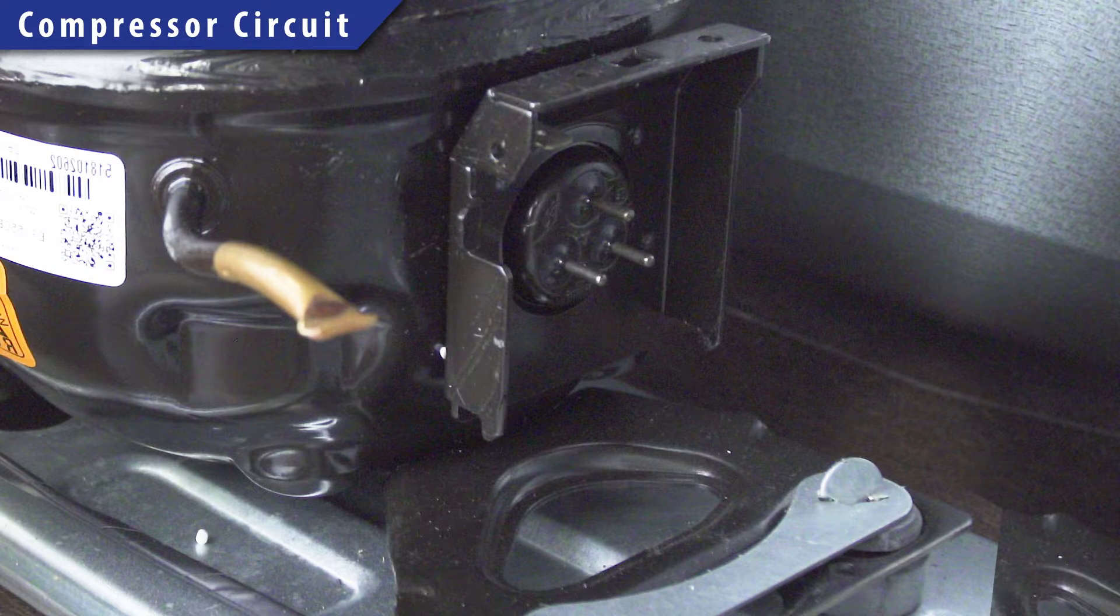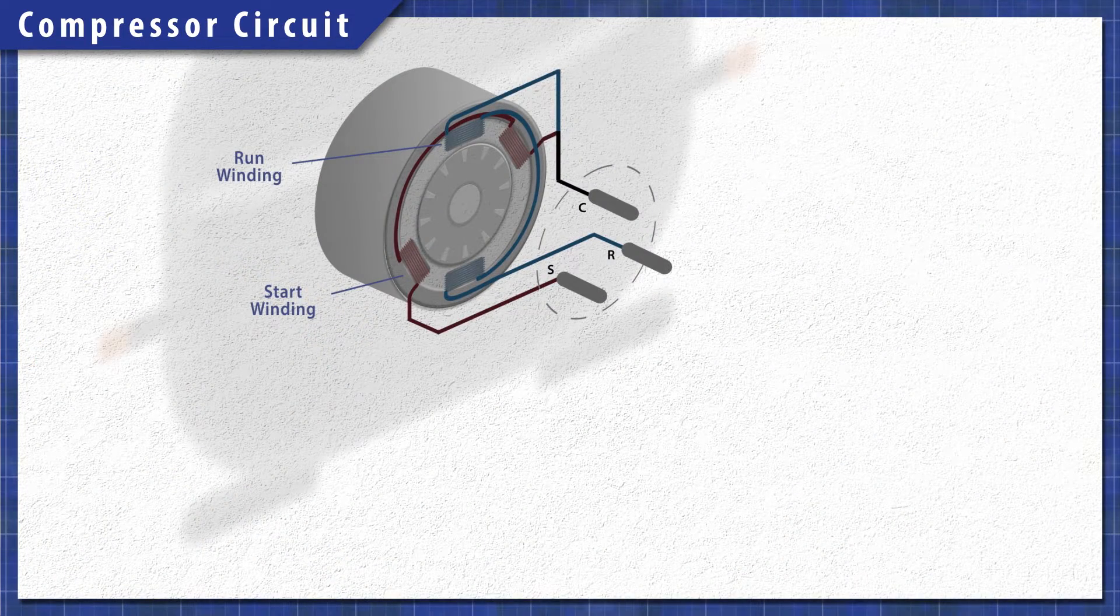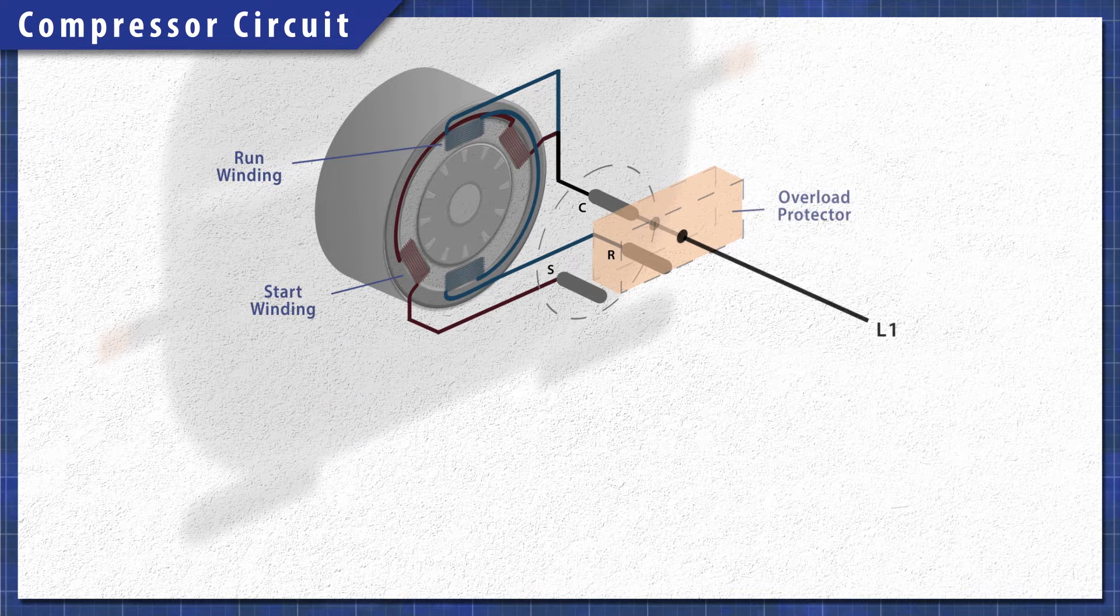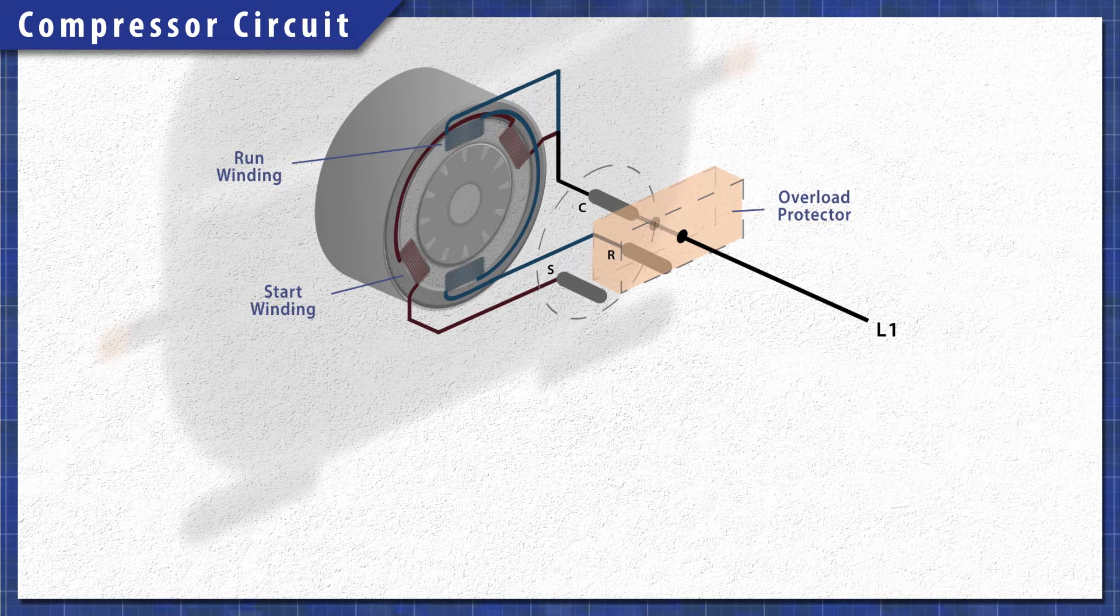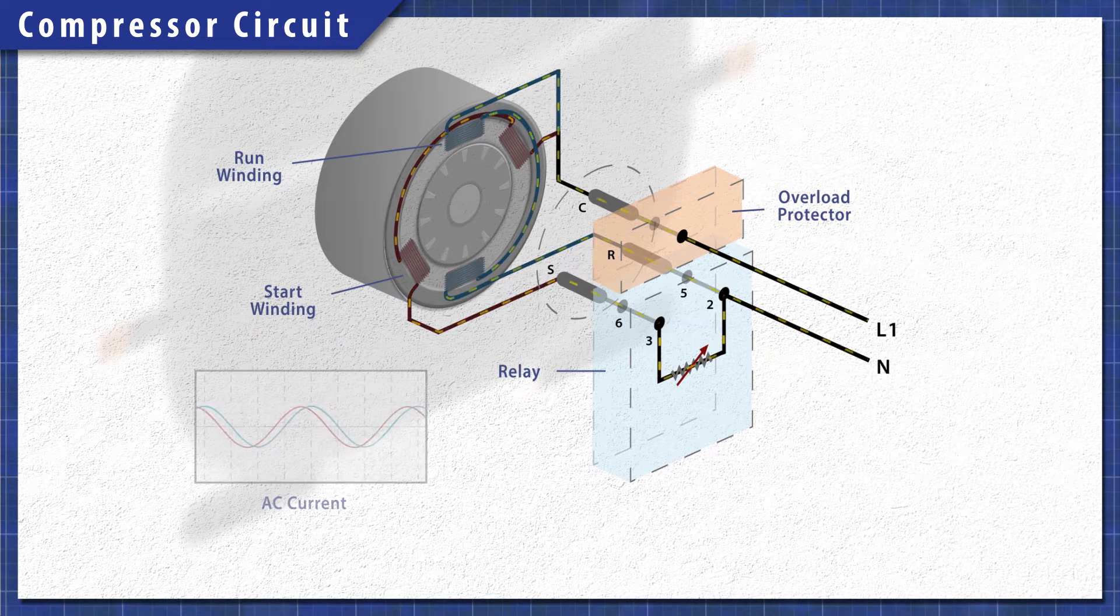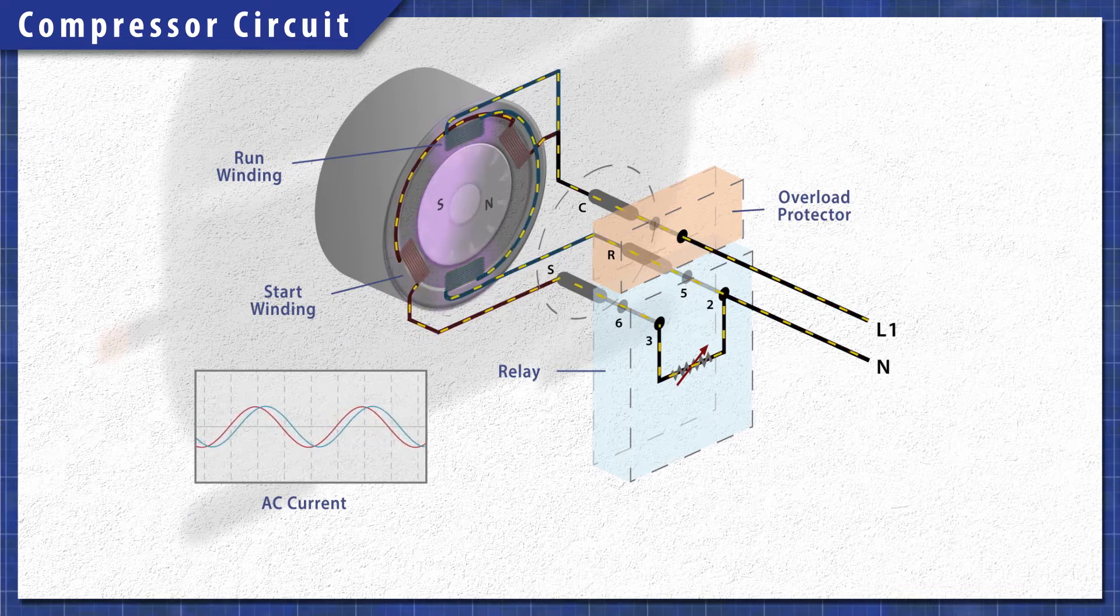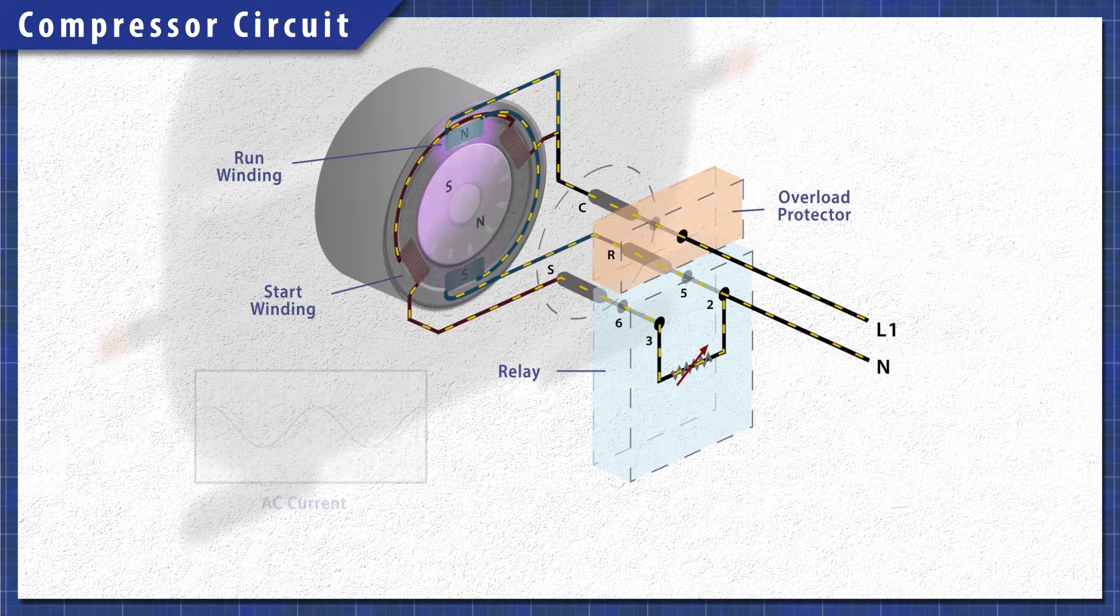The compressor uses a single phase motor. It has a start winding and a run winding which are both connected to a common terminal. Attached is an overload protector that disconnects power if the current or temperature gets too high. Single phase motors use resistance or a capacitor to create a phase shift in the start winding. This rotating magnetic field creates the torque needed to start the motor.